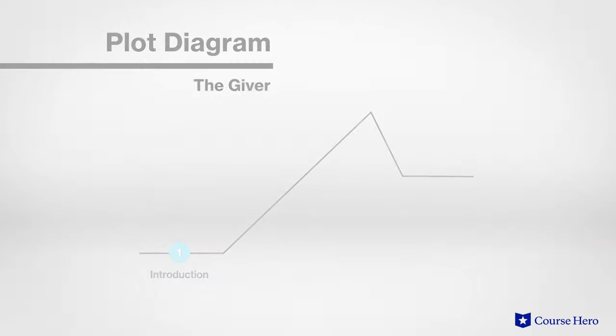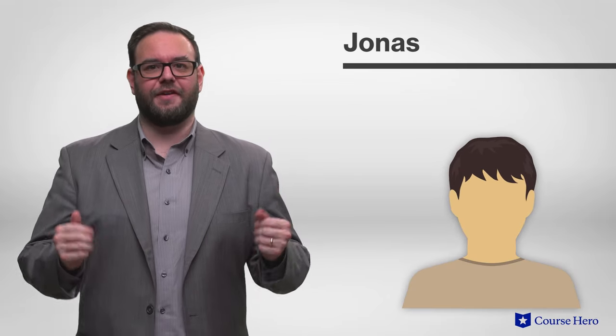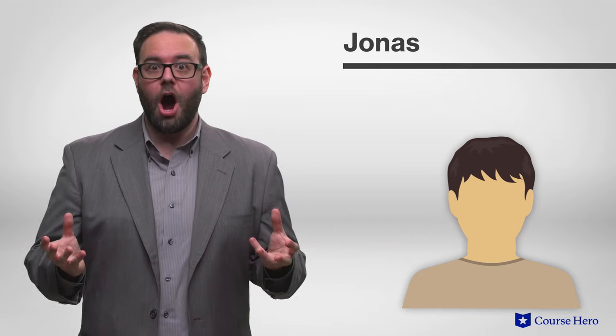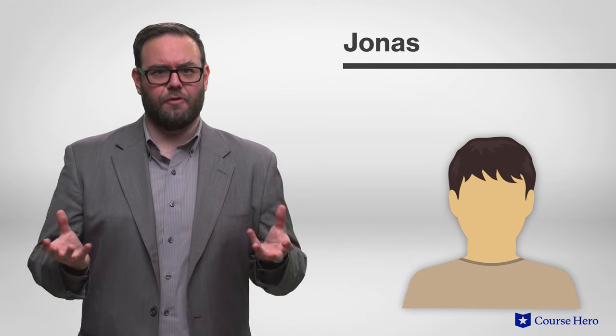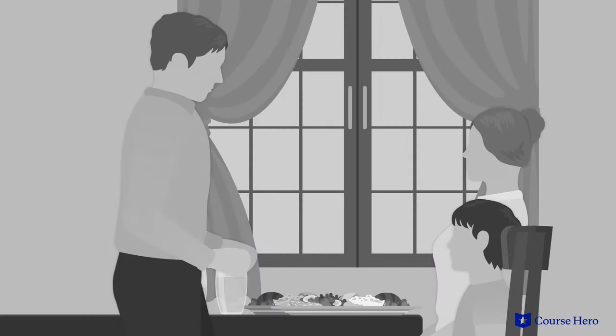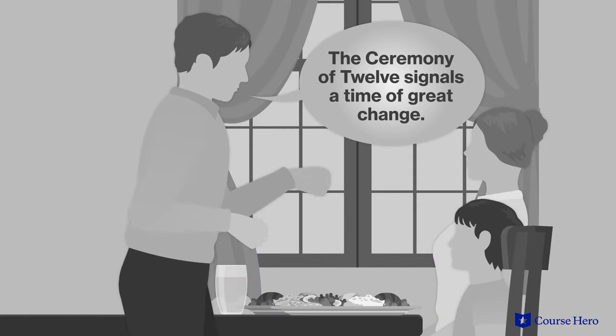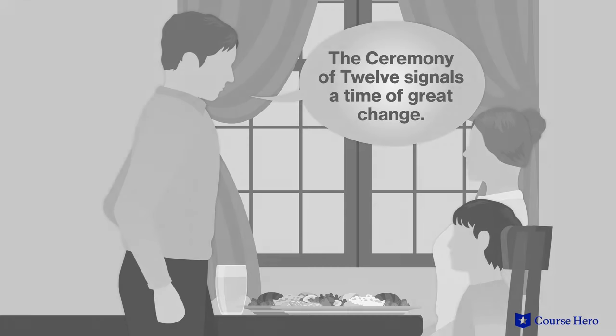In the introduction of The Giver, 11-year-old Jonas lives in what seems to be a perfect community. There's no crime, hunger, poverty, prejudice, or violence. Every citizen knows exactly how to behave and what their responsibilities are. But Jonas feels apprehension about the ceremony of 12, which he'll be participating in.